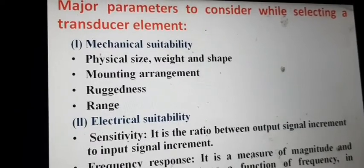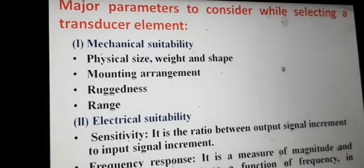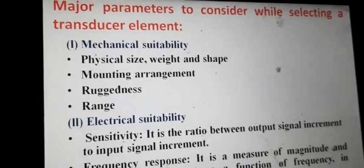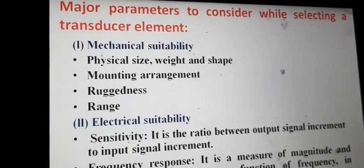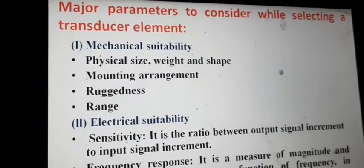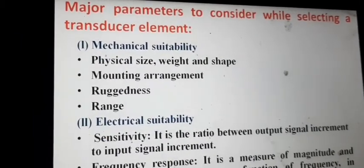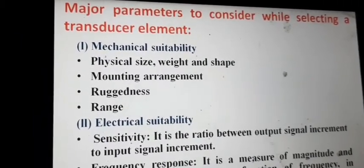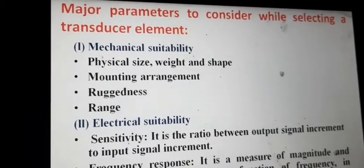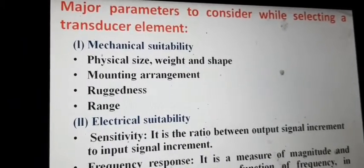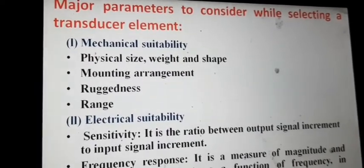Next, we should consider the mounting arrangement — how we can fix the transducer to the system we are measuring, or how we keep it in the flow environment. We have to consider how to mount or fix the transducer in that environment. The next parameter is ruggedness.